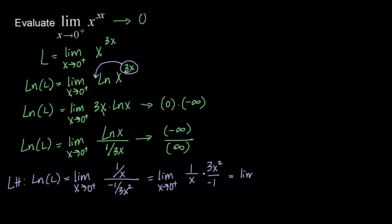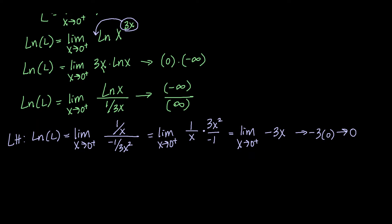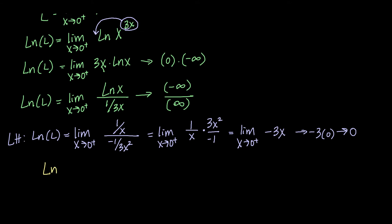Simplifying here, one of the x's cancels out, and I'm left with just negative 3x. Now I can evaluate: as x goes to 0 from above, this is negative 3 times 0, which goes to 0. Remember, that is not our limit — that is what we have for the natural log of our limit. So natural log of L equals 0, and to solve for L we raise both sides as the exponent of e. e to the ln of L becomes L, and e to the 0 is 1. So our actual limit value for the limit as x goes to 0 from above of x to the 3x is 1.